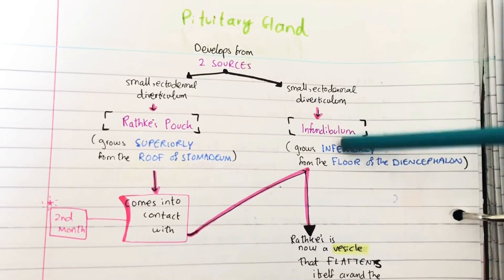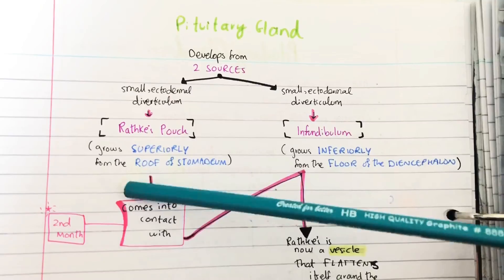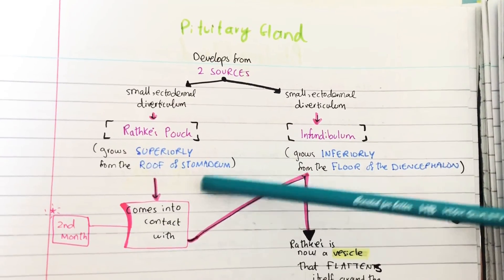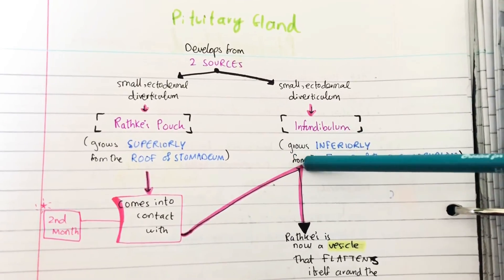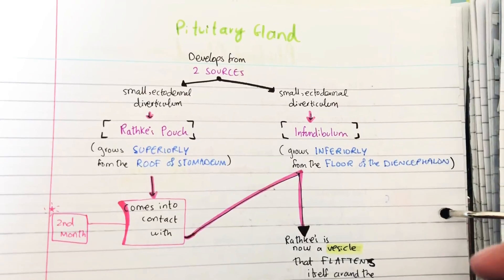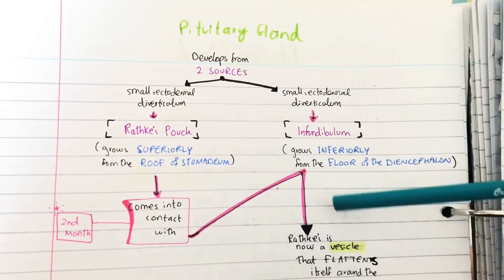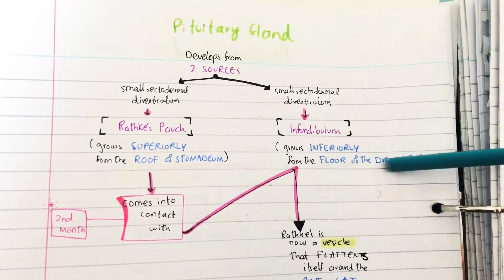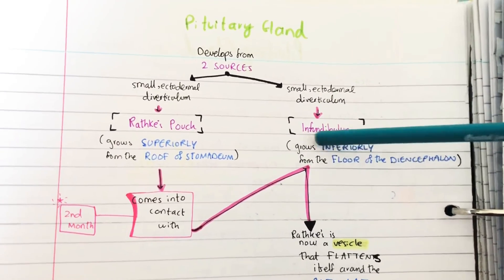The Rathke's pouch grows superiorly from the roof of the stomodeum, and the infundibulum grows inferiorly from the floor of the diencephalon. In about the second month, the Rathke's pouch comes into contact with the floor of the infundibulum, the floor of the diencephalon.